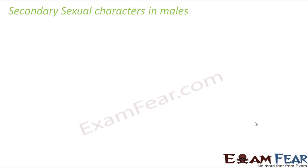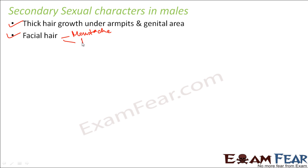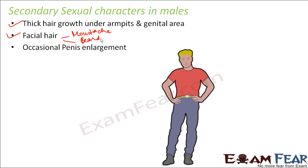Let us talk about the various secondary sexual characters in males — traits which are present exclusively in males and not in females. One is thick hair growth under armpits and the genital area; in males, hair growth is more, and in fact body hair is also more compared to females. There is also a lot of facial hair, which appears in the form of a moustache and beard, which is not present in females. Occasional penis enlargement is also a part of secondary sexual character — the penis enlarges and that is how sperms can get released.